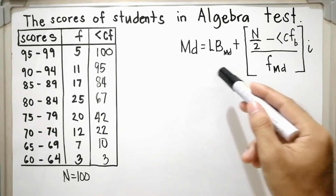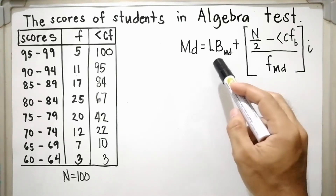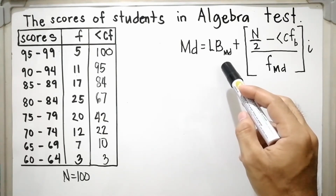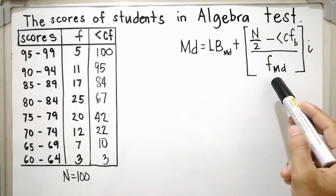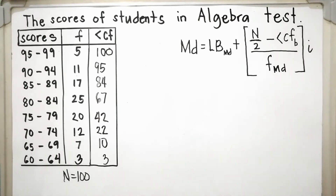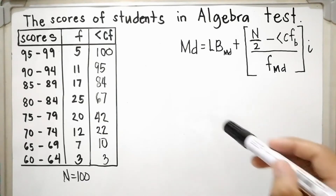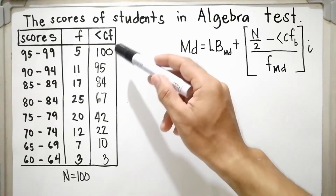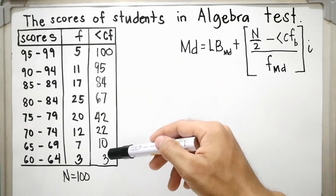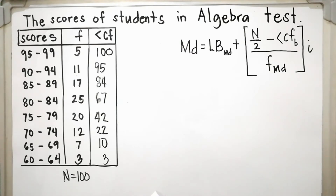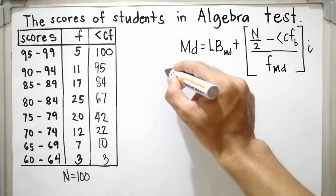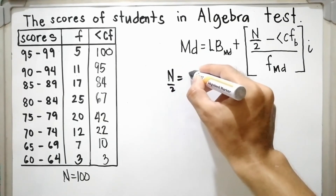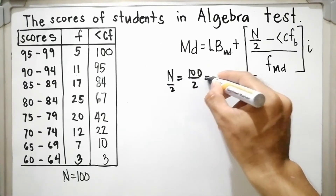Now let us calculate the median. We need to find all values for the formula: LB, N over 2, less-than CF below the median class, frequency of the median class, and the interval. The first step is to find the location of the median class. N over 2 is 100 divided by 2, which equals 50.